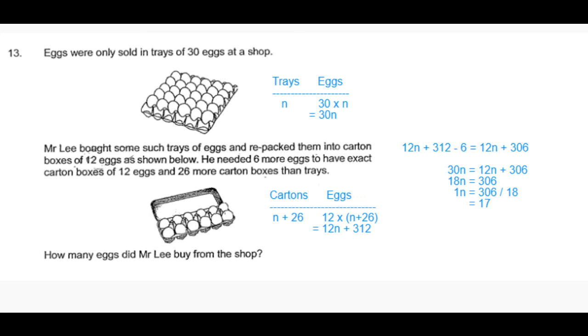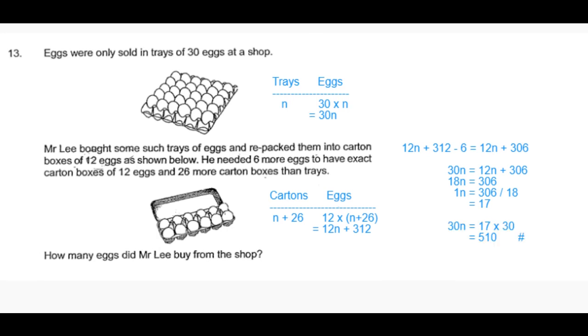The question is how many eggs did Mr. Lee buy? Mr. Lee bought a total of 30n eggs, which is equal to 17 times 30, which is 510 eggs. So that's the answer to this question.